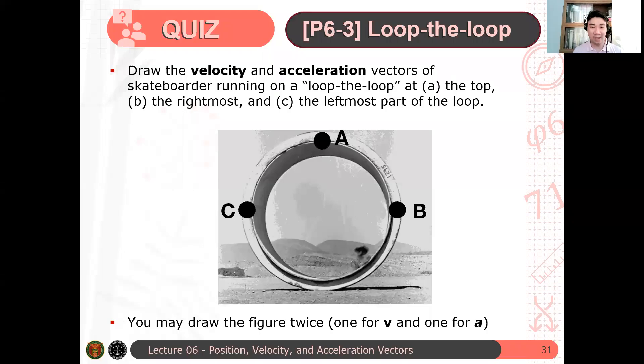Okay, so let's have an exercise. Draw the velocity and acceleration vectors of a skateboard running in this loop-the-loop. At the top, at point A, point B, and point C.